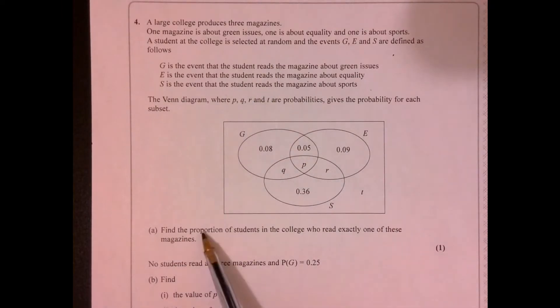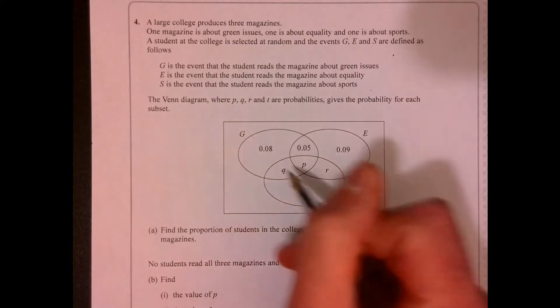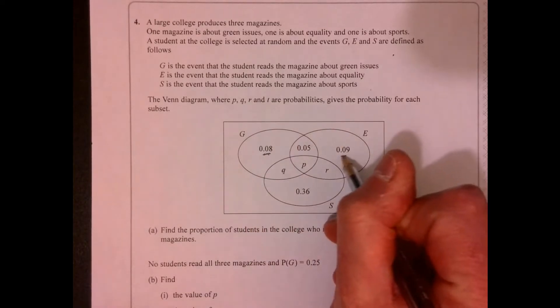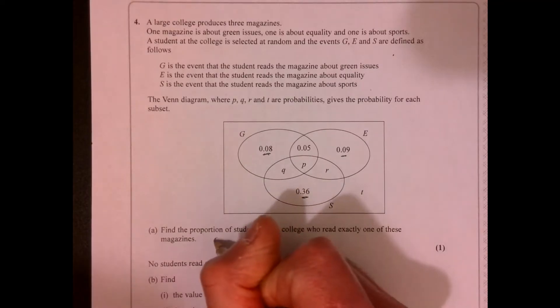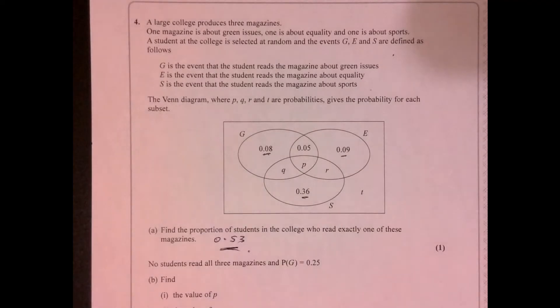Find the proportion of students in the college who read exactly one of these magazines. So that's that one, plus that one, plus that one. Add those together and that's 0.53. All right, nice mark to start off with. Let's ease into this gently.